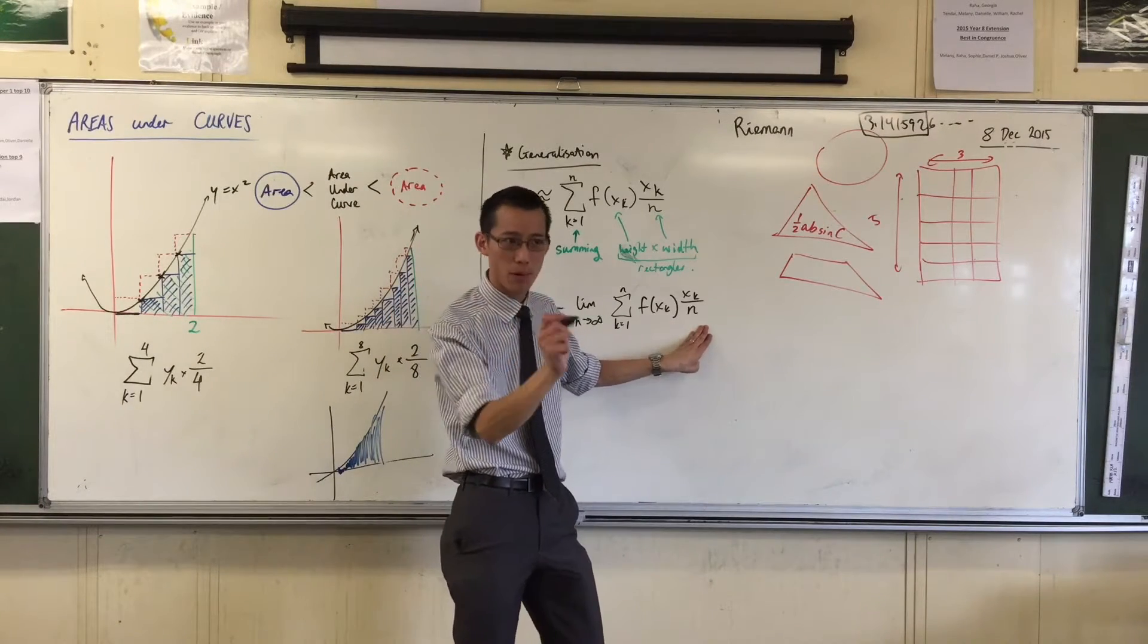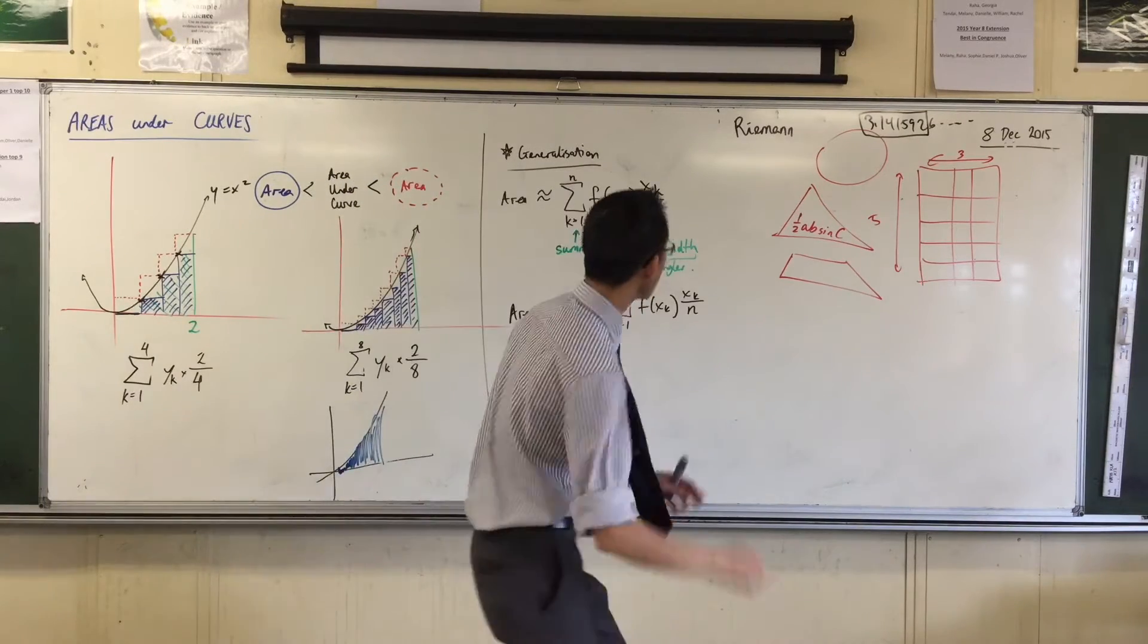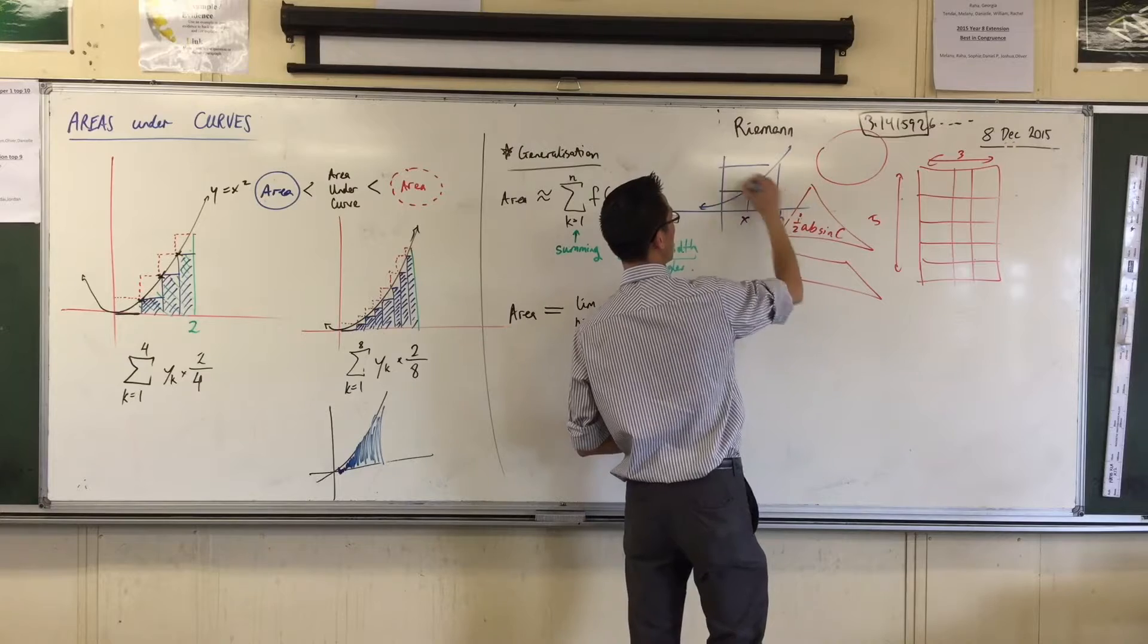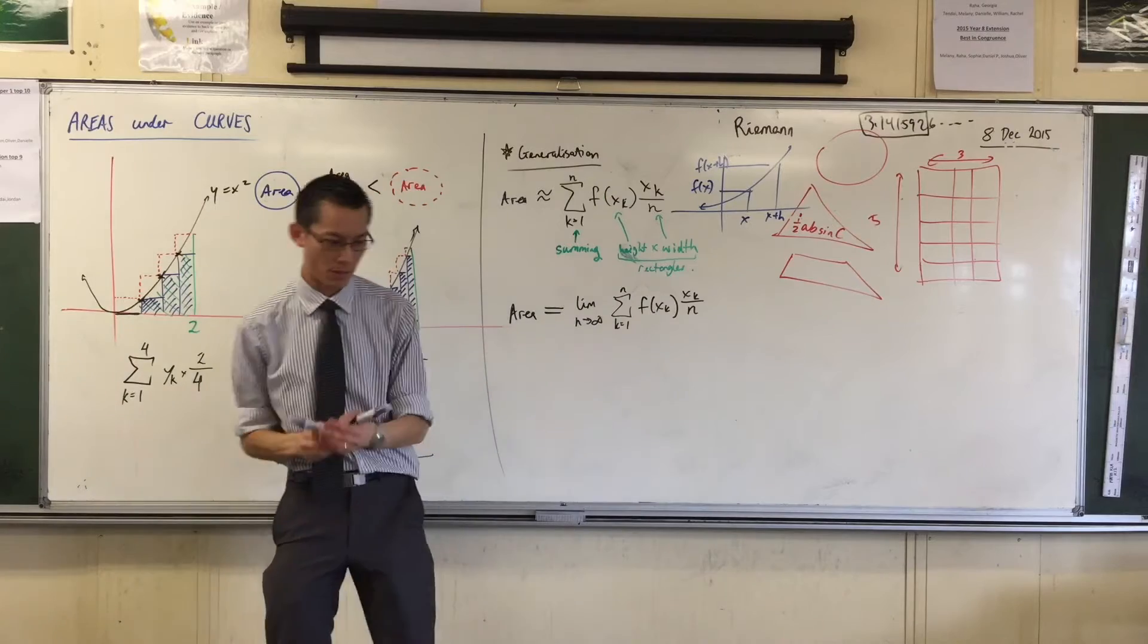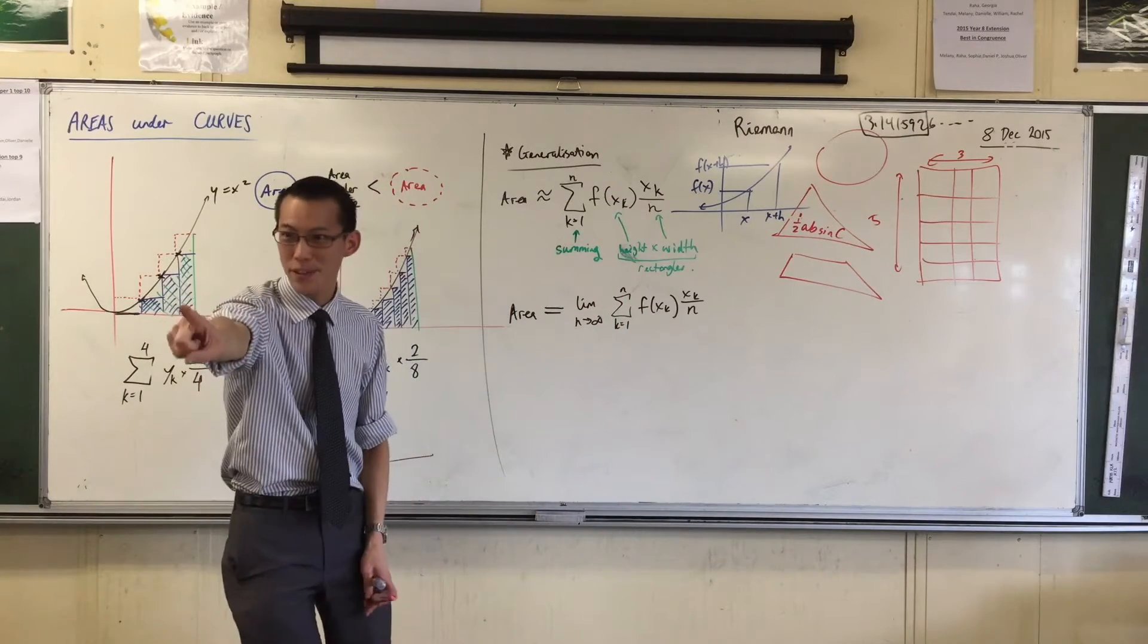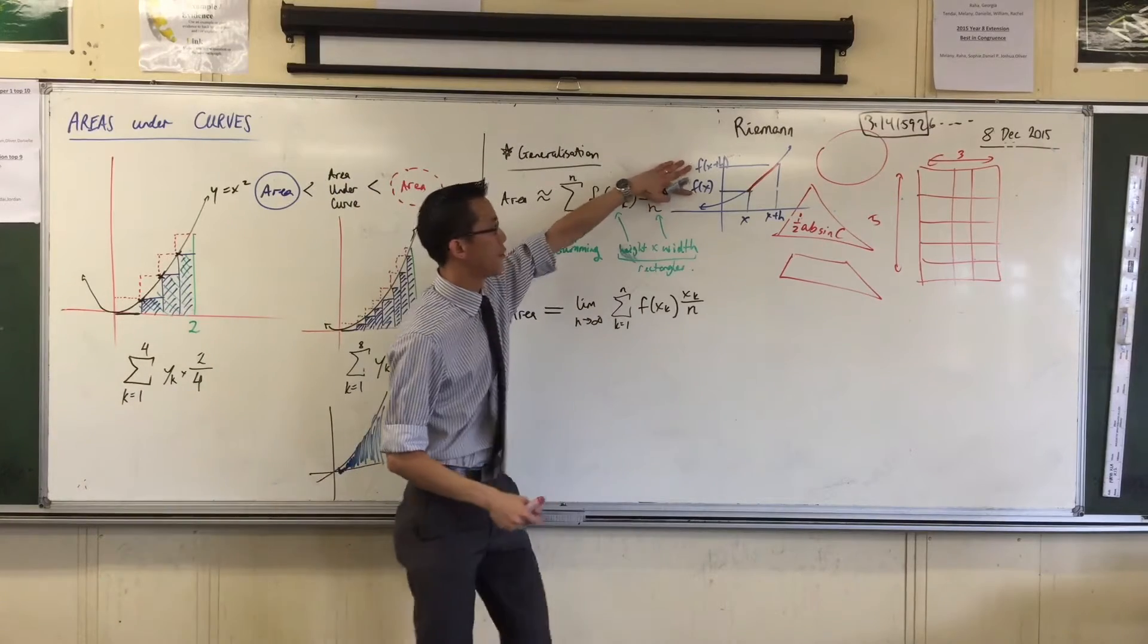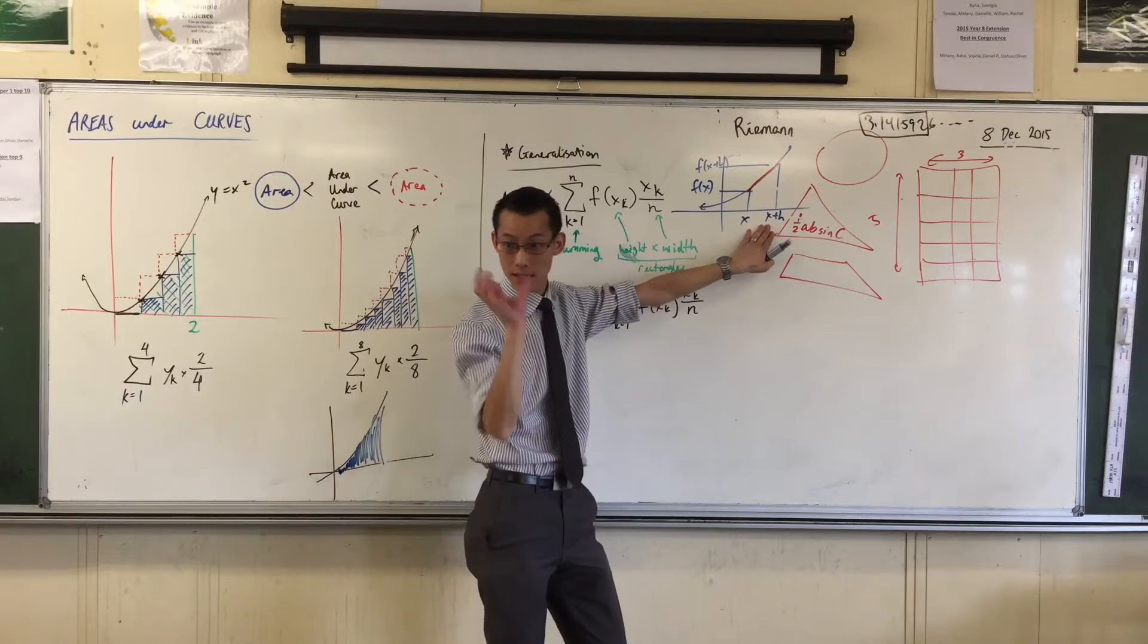It's important that it approaches zero, it doesn't actually get there, in exactly the same way that when we think about this guy. What's this a diagram of? What's it trying to find? It's trying to find first principles for the gradient at any particular point. Now the important thing is, we're getting rise over run. There's your f of x plus h minus f of x, there's your h, that's the run.